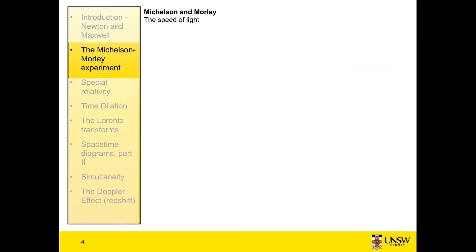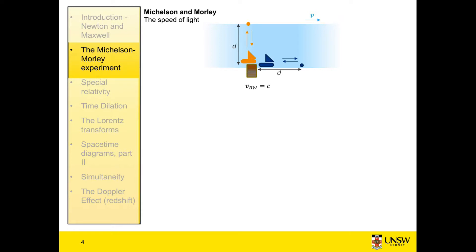Rather than jump straight into their experiment, I'm going to propose we start with a more familiar problem. We have a river flowing with a velocity v downstream, and we have a jetty. We're having a boat race — but a slightly different one than normal. We have our blue boat travelling downstream, parallel to the shore, to some marker point and coming back. And we have our orange boat travelling to a point directly opposite its starting point on the other bank. Both boats travel a distance d and both boats are travelling at a velocity relative to the water of c metres per second. We want to know which boat wins the race.